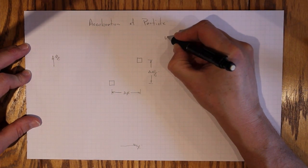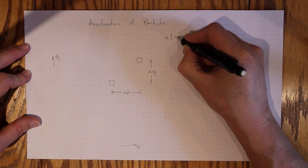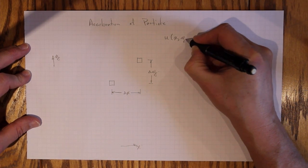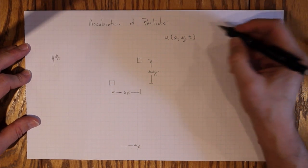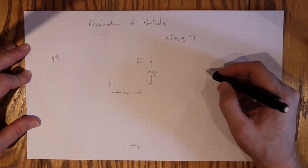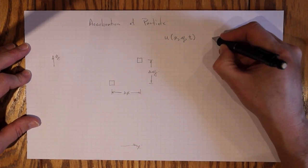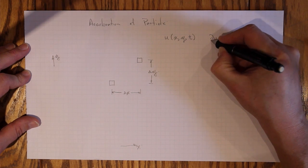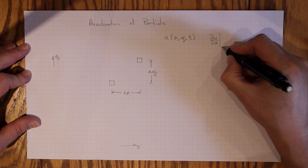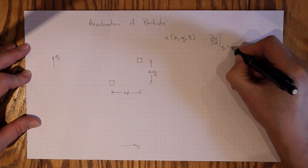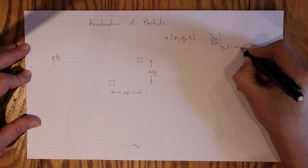So if the velocity u is a function of x, y, and time, then there are three separate partial derivatives. There's the partial derivative ∂u/∂x that's taken with y and t held constant.